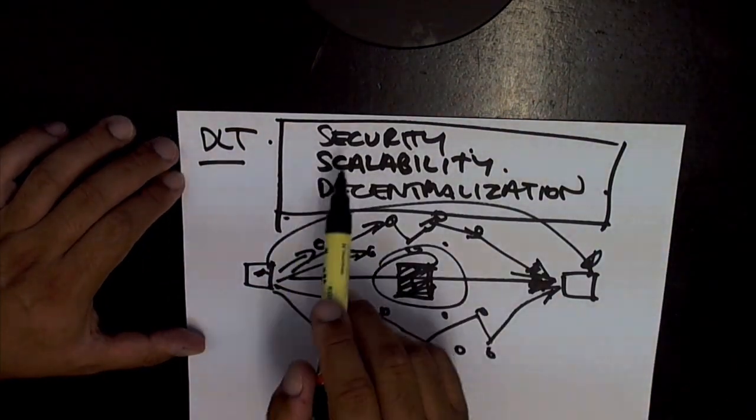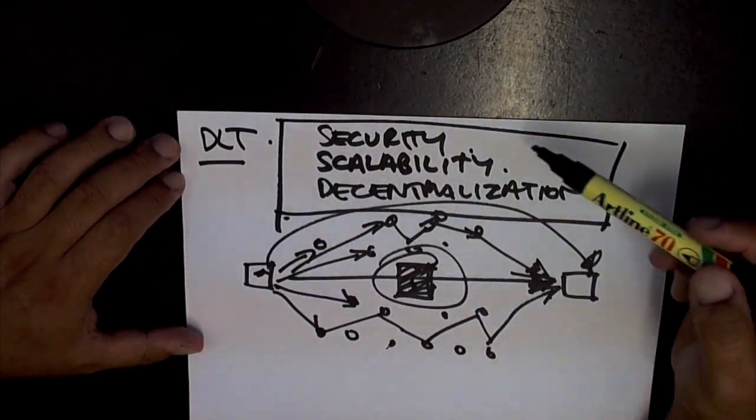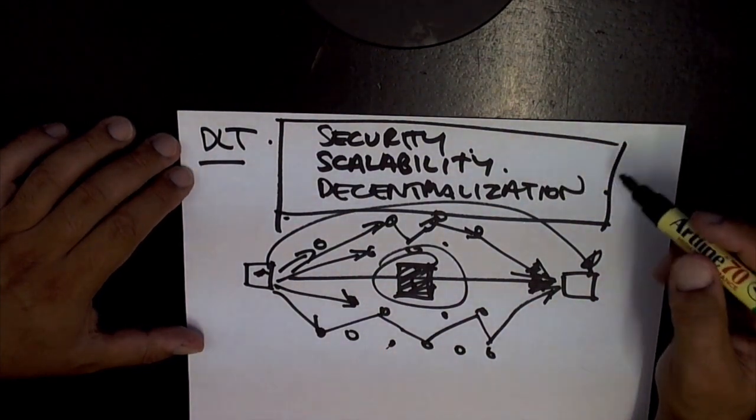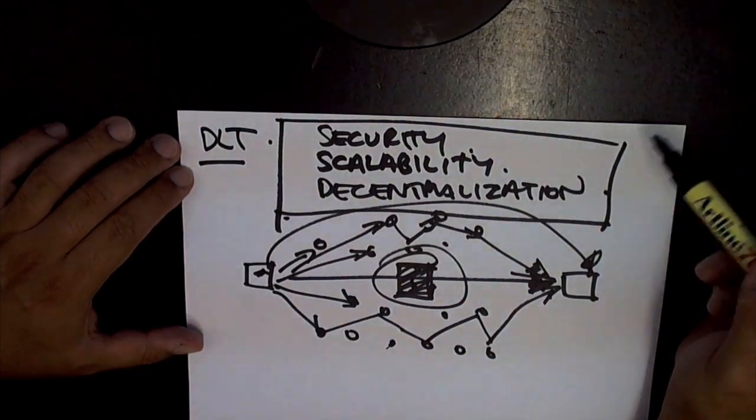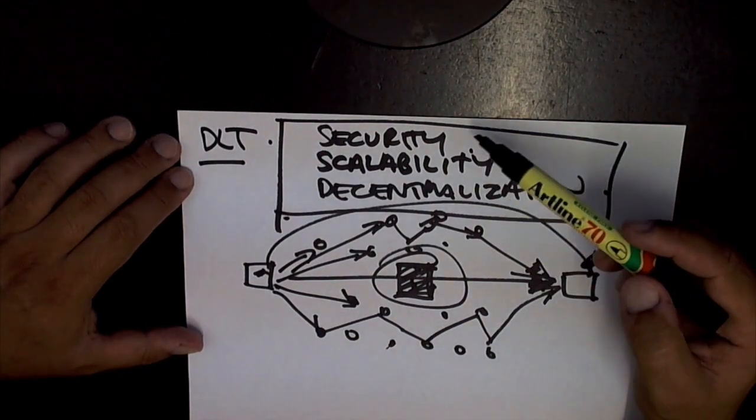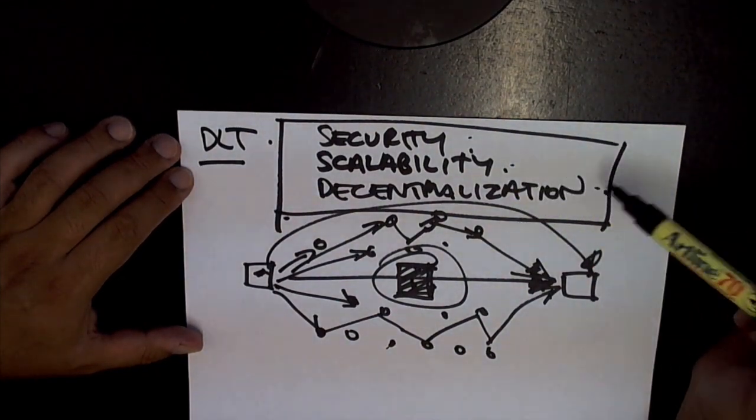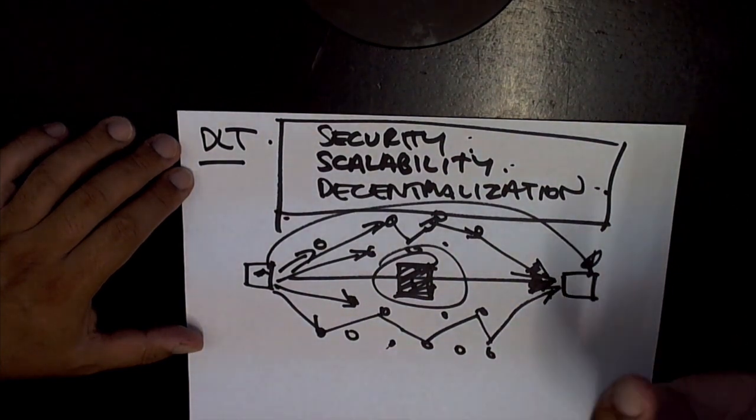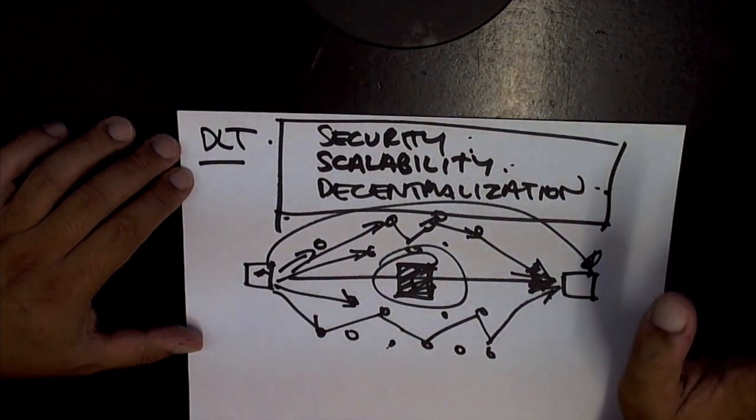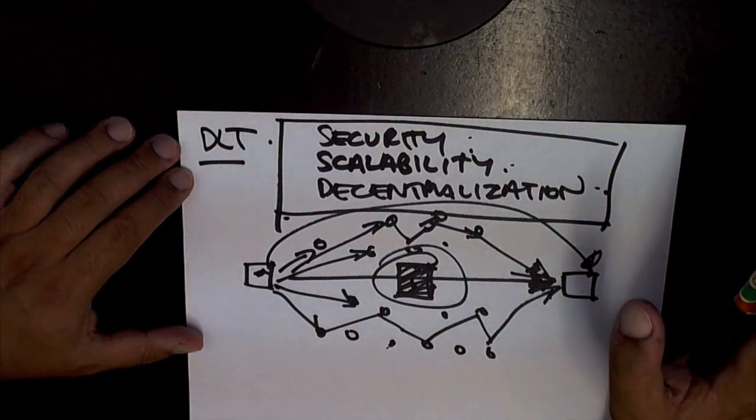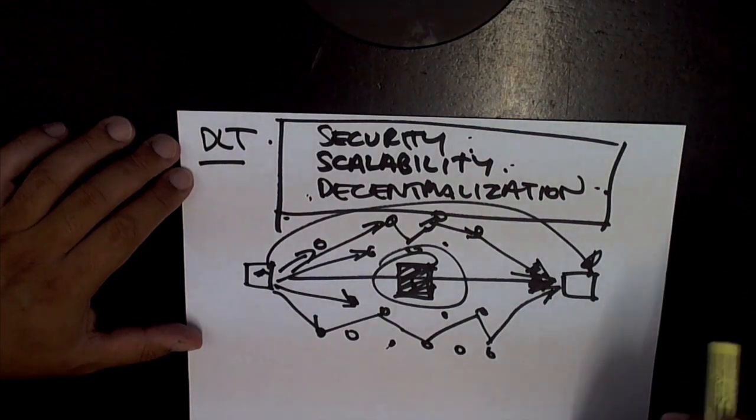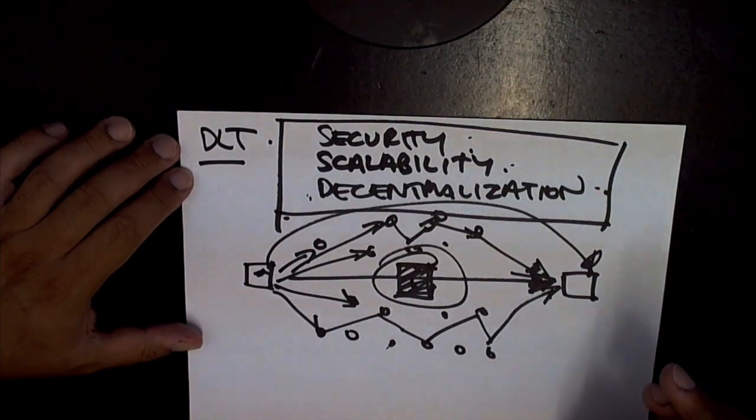This is what's called the blockchain trilemma, because until now it hasn't been established that any blockchain can fulfill these purposes. It's not quite complicated enough to handle the three things that it needs to handle, until Hedera Hashgraph came along.